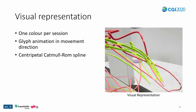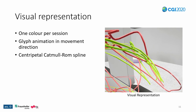Let's discuss the visual representation. For each session we have three trajectories in the same color, with different colors per session. To give users a way to understand the direction and speed of movement at a glance, we animate small glyphs on each section with the same direction and relative speed as the original movement. The glyphs also show the motion source, i.e., head or hands. To give the captured movement a more natural feel, we use centripetal Catmull-Rom splines instead of piecewise linear trajectories, ensuring we do not lose data or introduce too much artificial movement.